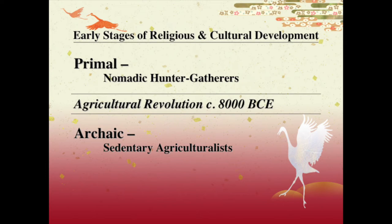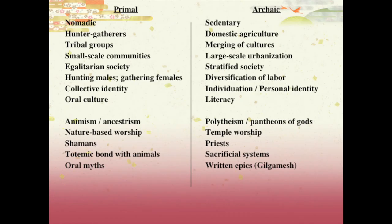Let's talk about how society, culture, and religion change from the primal period to the archaic period. On the next slide we have two columns — one primal, one archaic. We'll do the first part of the primal column, then jump over to archaic, then come back to primal for the second part. The top subjects relate more to the structure of society, whereas the bottom subjects are what we think of as being religious.